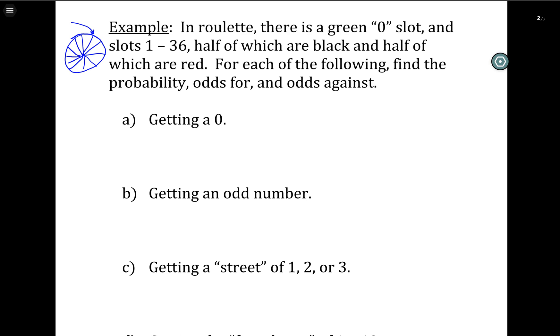So for each of the following, we're going to find the probability odds for and odds against of winning each of these bets. So first of all, getting a zero. So this is considered my A here. This is my probability event. How many things are in A? Well, there's just one getting a zero. There's only one way to get a zero. It's only one slot. But that's out of how many total? Now let's just be careful. We have a zero slot. And then we have one through 36. So there's actually 37 possible total slots. And zero is just one of them. So one out of 37.